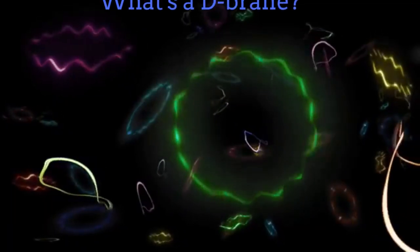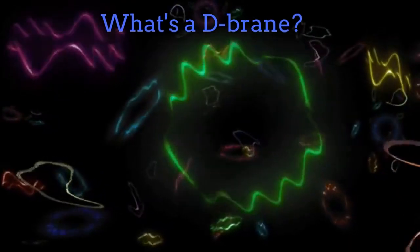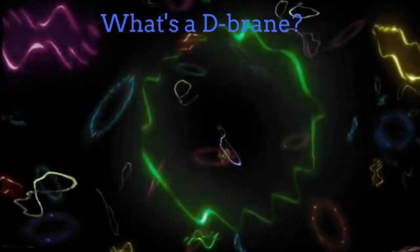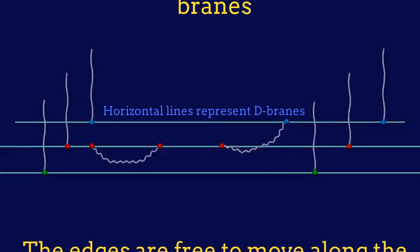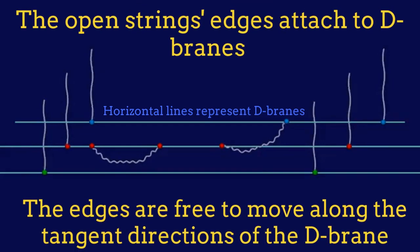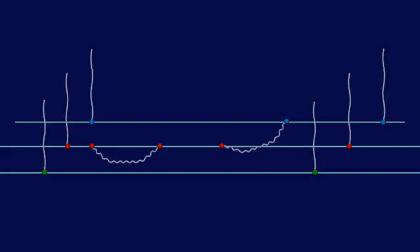But then the question comes: what is a D-brane? In string theory, we have open strings whose edges attach to D-branes. While the D-branes constrain the motion of the edges along normal directions, the string edges are free to move along the tangential directions.